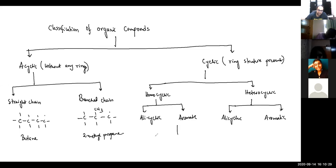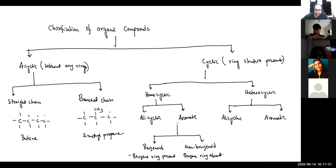Aromatic you have benzenoid, non-benzenoid. Benzenoid means benzene ring present. Non-benzenoid means benzene ring absent. So that's for aromatic.